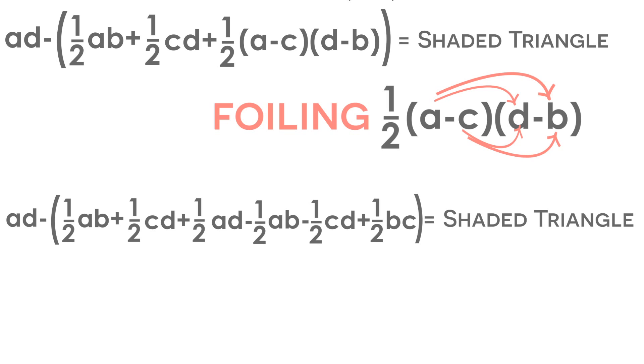Now notice how we have some terms that cancel each other out. We have a positive one-half AB and a negative one-half AB that cancel each other out. And we also have a positive one-half CD and a negative one-half CD that also cancel each other out.